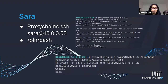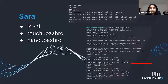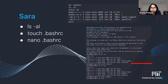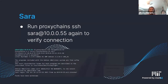We knew the exit command in .bashrc was the problem, so we needed to find a way to remove it, just as we did with John. In Sarah's account, we used ls -al to list all files. Since we didn't have edit permissions, we deleted the .bashrc file, created a new one using touch, but this time without the exit command. After exiting Sarah's account to test our changes, running 'proxychains ssh sarah@10.0.0.55' without /bin/bash successfully kept the connection.